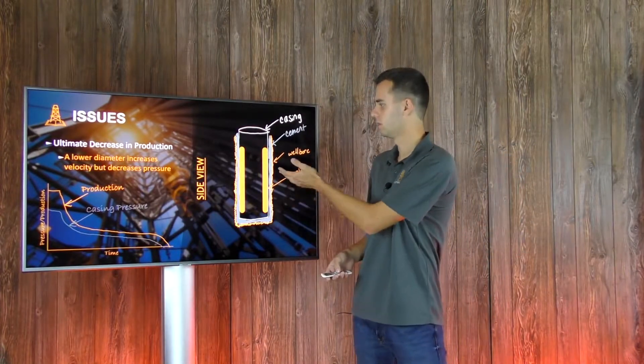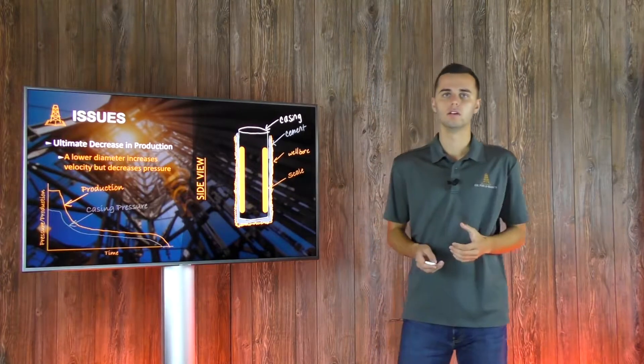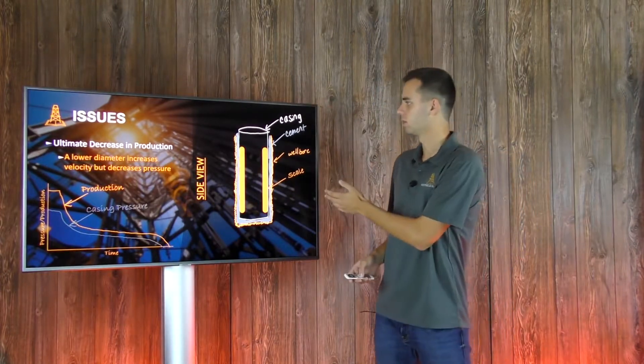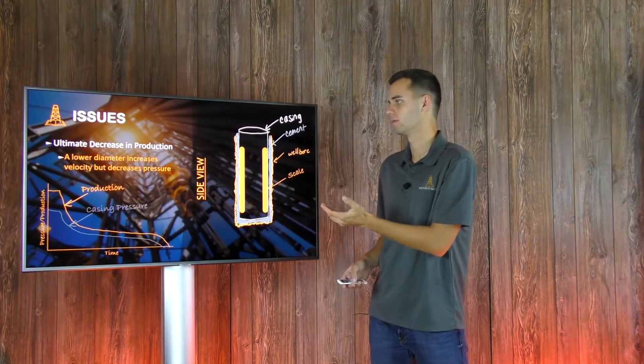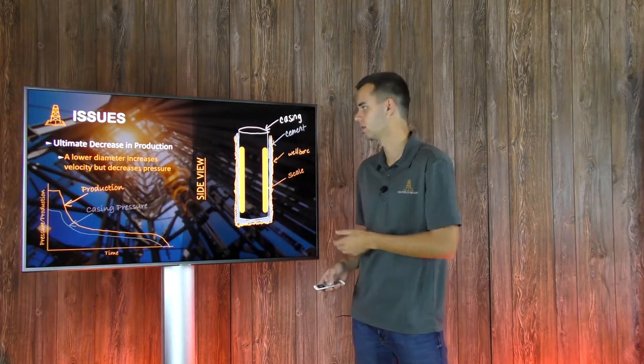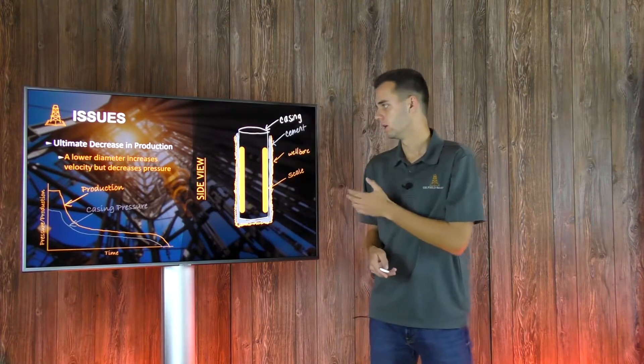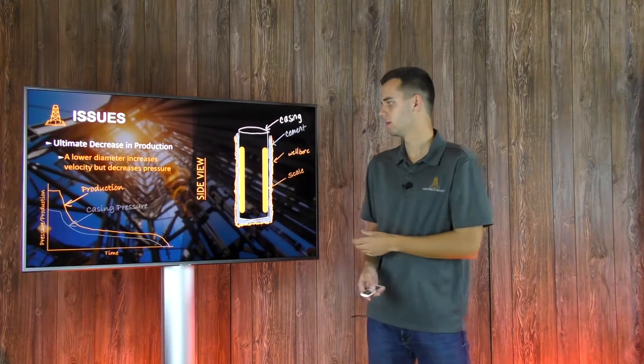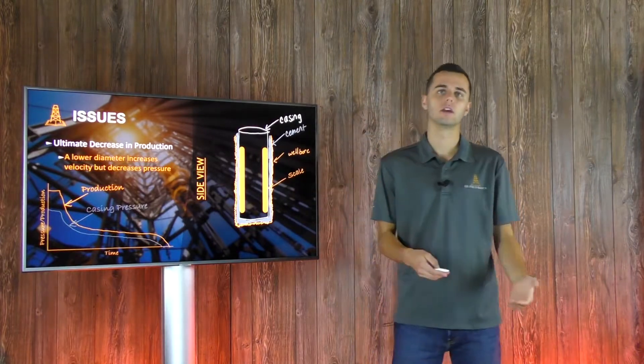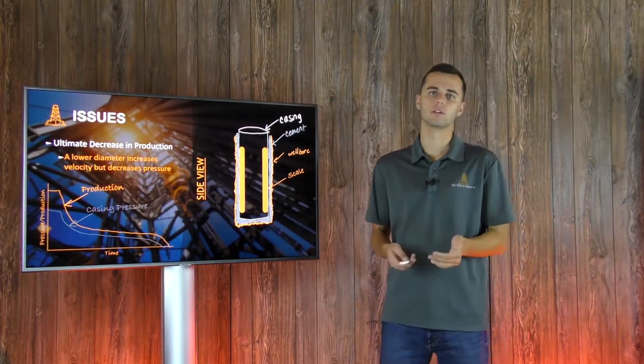It just depends on your formation and your reservoir characteristics on how quickly that could develop. This is a side view of the lateral portion of the well. You have your casing, your cement, your wellbore itself, and then this is a very uniform and nice picture of scale, which is not what it looks like at all. But as you can see, it decreases the diameter of your pipe. It could close off perforations and thus decreasing the production of your wells.